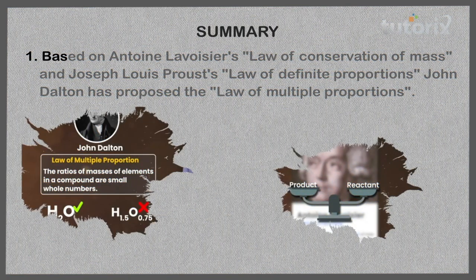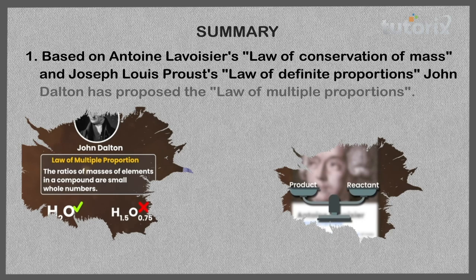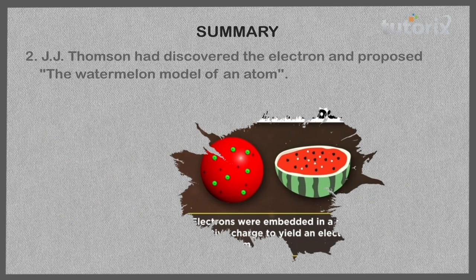So this was all about the history of the structure of the atom and how it evolved through the years. To summarize: based on Lavoisier's law of conservation of mass and Joseph Louis Proust's law of definite proportions, John Dalton proposed the law of multiple proportions. J.J. Thomson then discovered the electron and proposed the watermelon model of an atom.